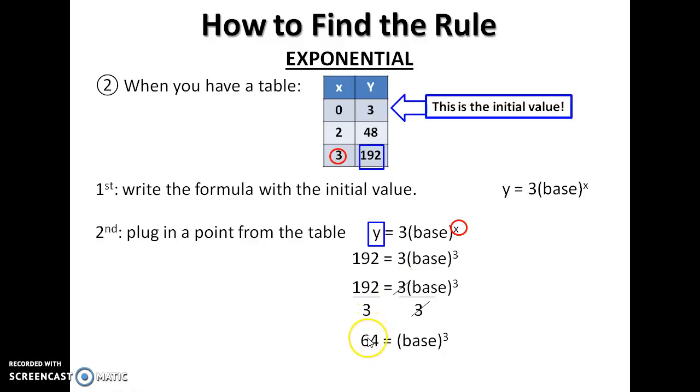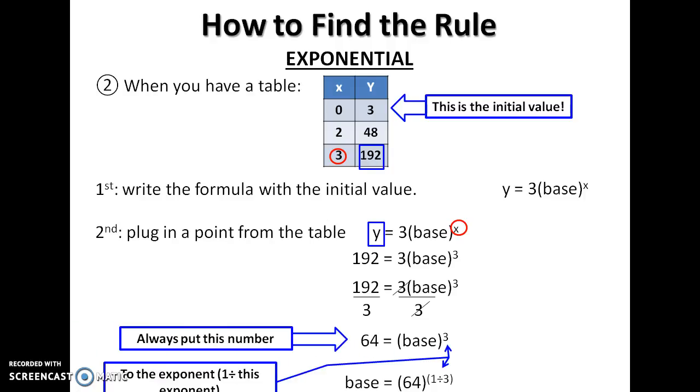And here, I can either do the cube root to find the base or, more generally, do this number to the exponent of 1 over this. And 64 to the exponent 1 over 3 is 4.